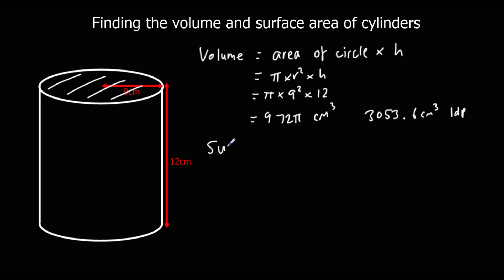Surface area. We need to do the area of each surface. We know we've got two circles, one at the top, one at the bottom. The area of them is pi times a radius squared. So we've got pi times r squared, pi times 9 squared in this case, so 81 pi. And I've got two of them. So I've got 81 pi, 81 pi, top and bottom.